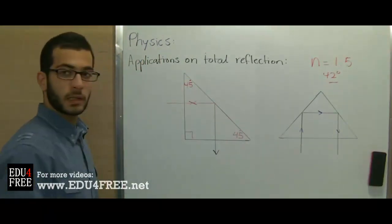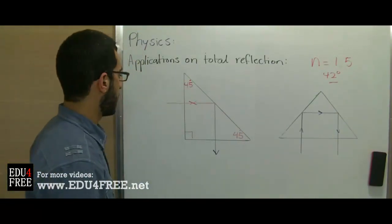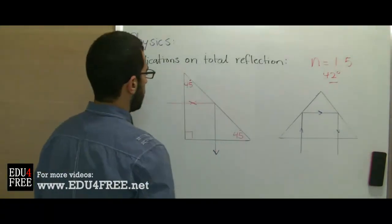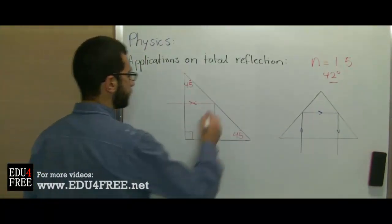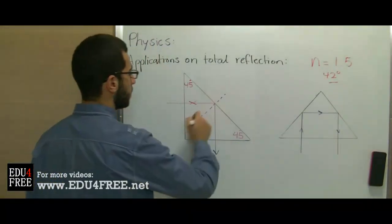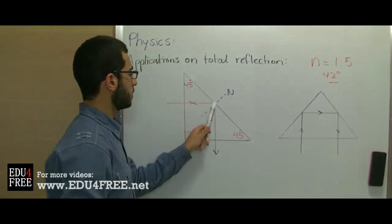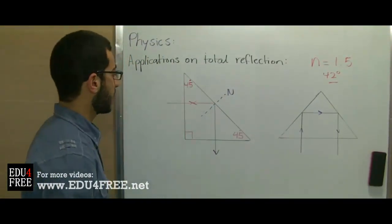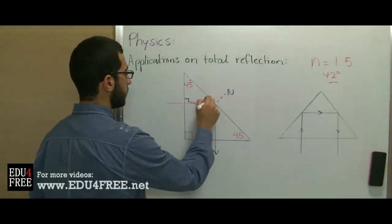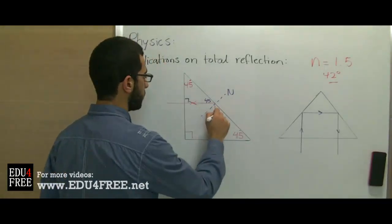Such a prism can reflect light by 90 degrees or 180 degrees. For example, if light goes from this side, we will see that light reflects this way. This is the normal, and so light falls by this angle. So this is the right angle, this would be also 45 degrees. So the angle of reflection will also equal 45 degrees.